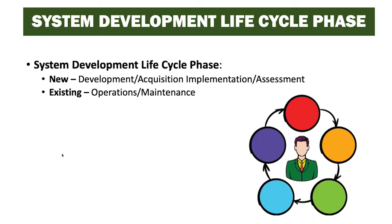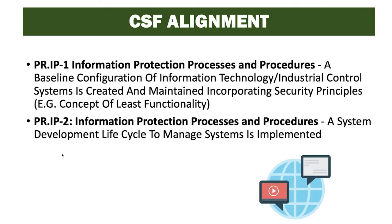This task aligns with the SDLC. For a new system, it aligns with development, acquisition, or implementation and assessment. For an existing system, it aligns with operations and maintenance. It also aligns with the Cybersecurity Framework — specifically PRIP1, information protection processes and procedures, where a baseline configuration of IT or industrial control systems is created and maintained incorporating security principles such as least functionality; and PRIP2, where a system development lifecycle to manage systems is implemented.